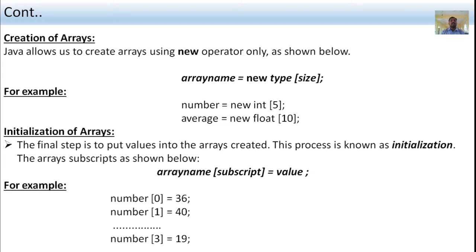Next, initialization of arrays. The final step is to put values into the arrays once created. This process is known as initialization. The syntax for array initialization is: arrayName[subscript] = value; For example: number[0] = 35; number[1] = 40; up to number[3] = 19.